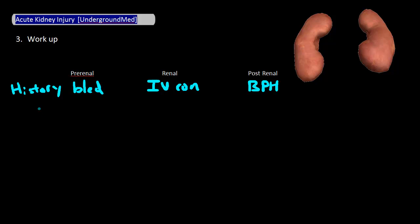Similar to history, a physical exam is going to be very important. Vital signs and other findings such as edema, JVP, and cap refill can tell you about volume status. Ins and outs can tell you if the insult is improving or worsening. Systemic symptoms can make you more suspicious of a systemic cause directly damaging the kidneys, and a rectal exam can tell you if the patient's prostate is enlarged.